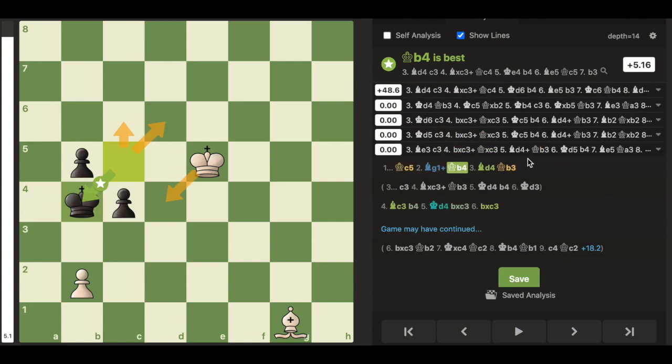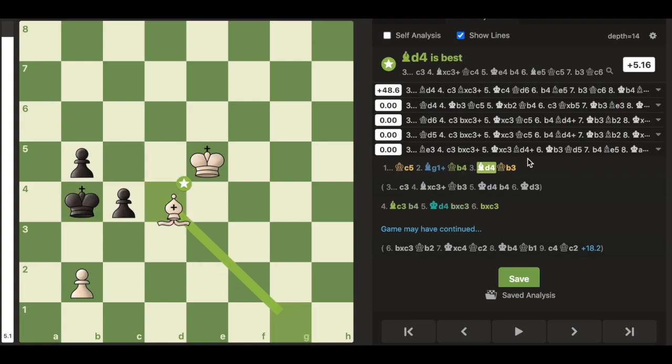I can win this pawn endgame by playing bishop to g1 check. After that, black's best move is to play king to b4, because any other square is going to allow the white king to sneak in and take the black pawns.